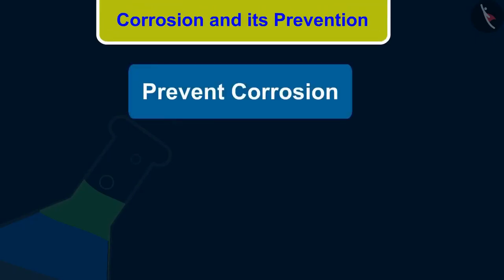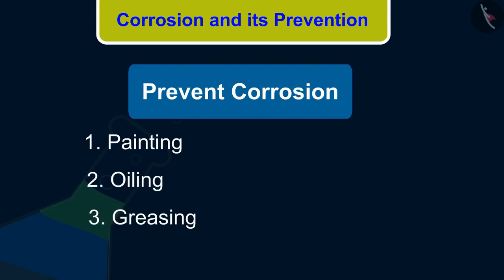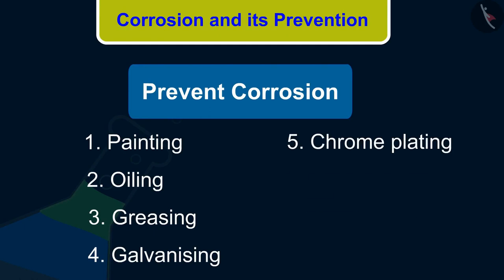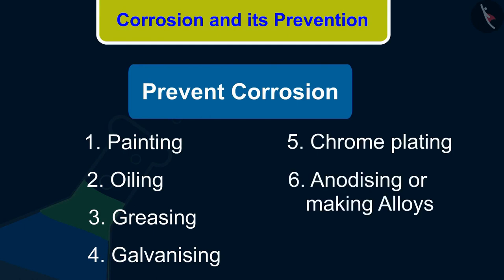Let us now figure out the ways in which we can prevent corrosion. The rusting of iron can be prevented by painting, oiling, greasing, galvanizing, chrome plating, anodizing, or making alloys.